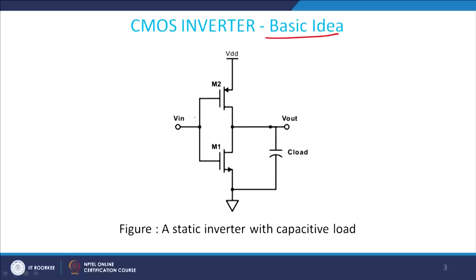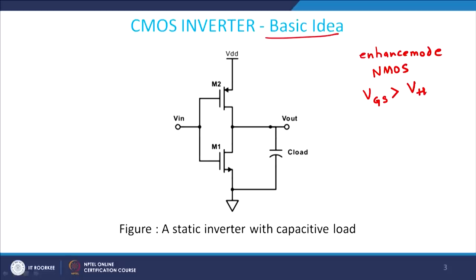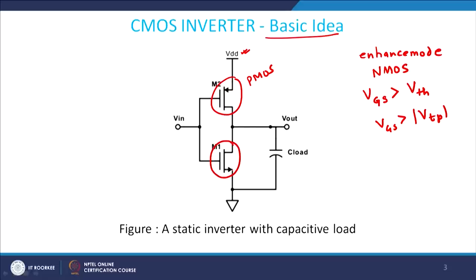Looking carefully at the basic idea: we discussed in our previous lectures that if we are using an enhancement mode MOSFET — an N-channel enhancement mode MOSFET, i.e., NMOS — we require a gate voltage larger than the threshold voltage of the device to turn it on. For PMOS, VGS should be greater than the magnitude of VTP, which is the threshold voltage of the P-type device. With that condition satisfied, we can achieve the switching on and off condition.